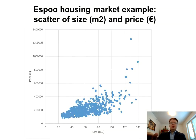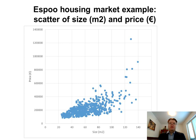Remember, I already mentioned this in the previous lesson. Here was the scatter plot of the ESPO housing market, where I plotted the explanatory variable and the dependent variable. But this kind of scatter plot only applies if you have a single regression case. If you have multiple explanatory variables, then it's not so simple to make this kind of scatter plot of your data.